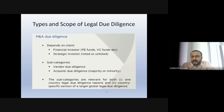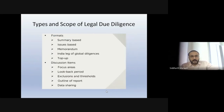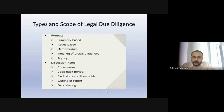Your perspective and the materiality of issues change based on whether it's a direct or indirect transaction. You either do a diligence specifically for the company being bought, or as part of a global deal it's just one of the India legs. The formats of legal due diligence reports include a summary-based report, an issues-based report memorandum, an India leg of global diligence, and a top-up report.